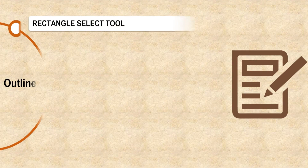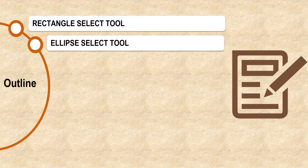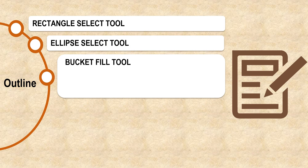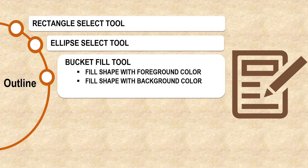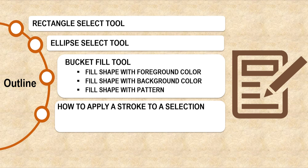Welcome to MOOCs module on graphics and animation development. In this session we will cover some of the GIMP tools like rectangle select tool, ellipse select tool, and bucket fill tool along with the options like filling the shape with foreground color, background color, and pattern. We will also learn how to apply a stroke to a selection.